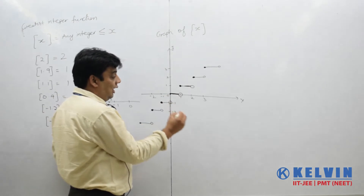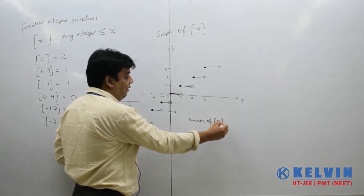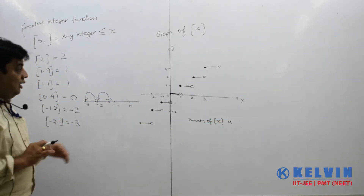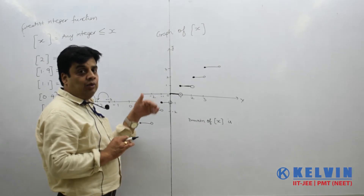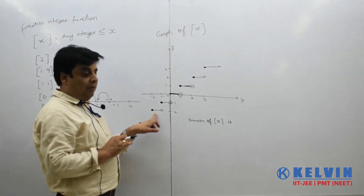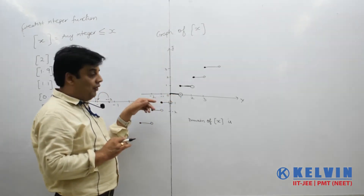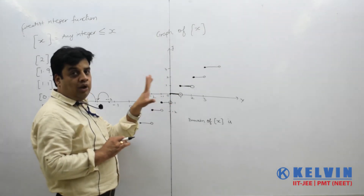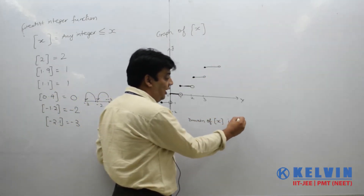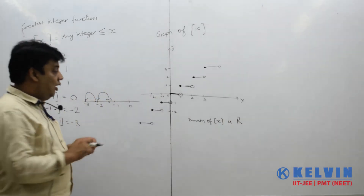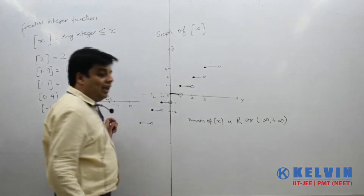Now let us discuss the domain of Greatest Integer of x. Domain means the values of x where the function is defined. You can see this function is defined for every real value of x — it can take any value, integer or non-integer. So the domain of this function is every real value of x, that is R, or we can write it as minus infinity to plus infinity.